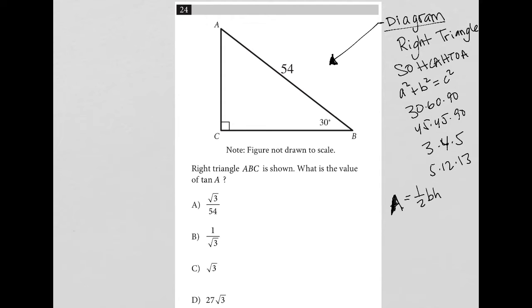So what do I know about this right triangle? I have this 30 degrees here. I have 90 degrees here, which tells me that this has to be 60 degrees. So that means I am definitely here at this 30, 60, 90 special right triangle.